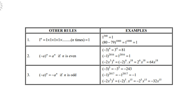Negative a to the power n equals positive a to the power n when n is even. Take note: if n is an even number, the result becomes positive. For instance, negative 3 to the power 4 becomes positive 81. Negative 1 to the power 2016 becomes positive 1. And negative 2x cubed to the power 6: you get negative 2 to the power 6 times x to the power 18, which becomes positive 64x to the power 18.